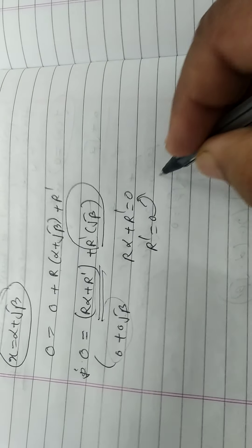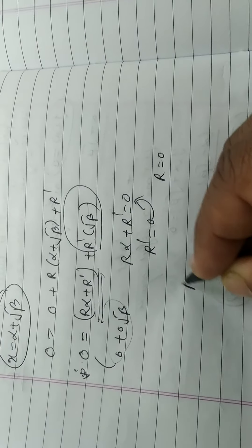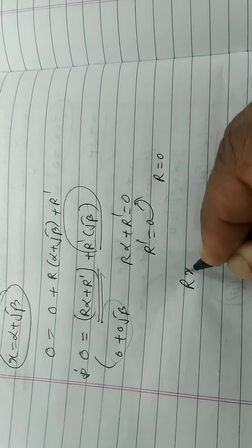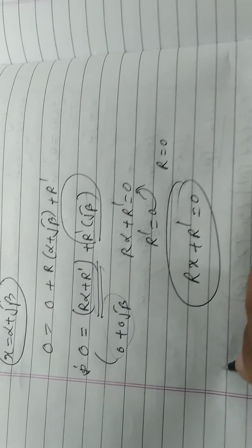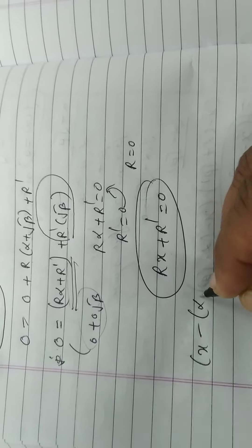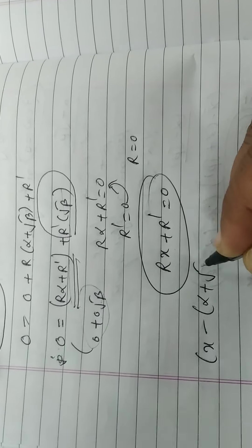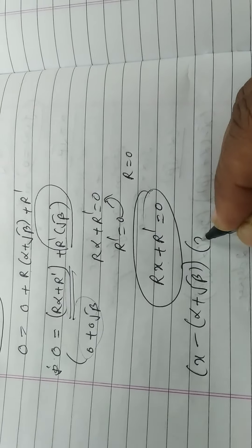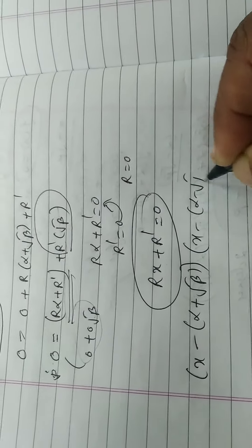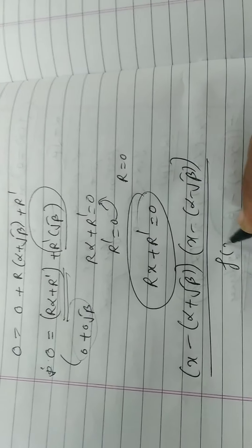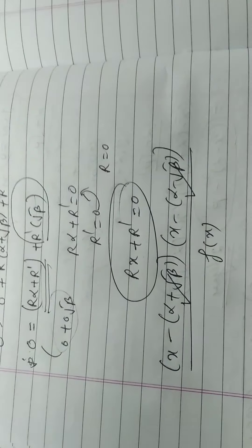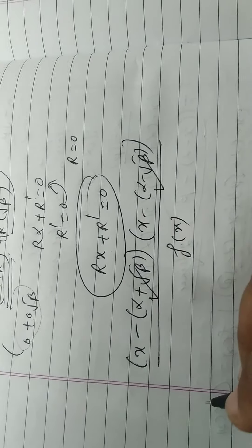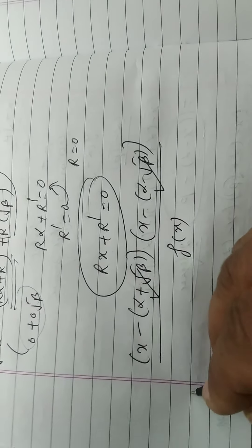अब चूंकि β not a perfect square है, irrational और rational parts separately zero होने चाहिए। इसलिए r = 0 और rα + r' = 0, जिससे r' = 0 भी। तो reminder पूरा 0 आ गया, इसका मतलब वह quadratic factor f(x) को पूरा divide करता है — अतः α - √β भी root है।